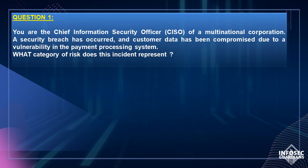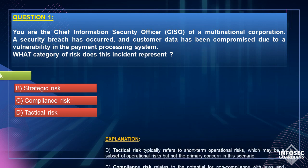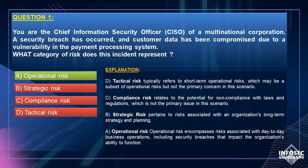Let us review each option one by one. Option D, Tactical Risk, typically refers to short-term operational risks, which may be a subset of operational risks, but not the primary concern in this scenario. Option C, Compliance Risk, relates to the potential for non-compliance with laws and regulations, which is not the primary issue here. Option B, Strategic Risk, pertains to risks associated with an organization's long-term strategy and planning. Option A, Operational Risk, encompasses risks associated with day-to-day business operations, including security breaches that impact the organization's ability to function. Hence, Option A, Operational Risk, is the correct answer.